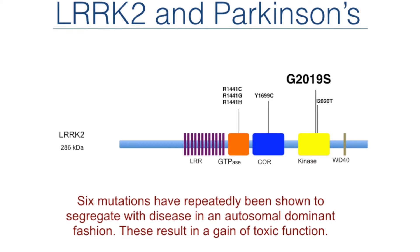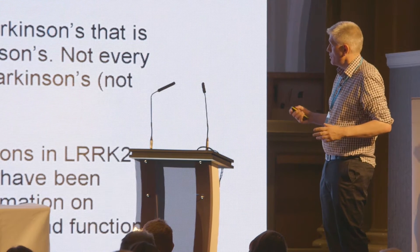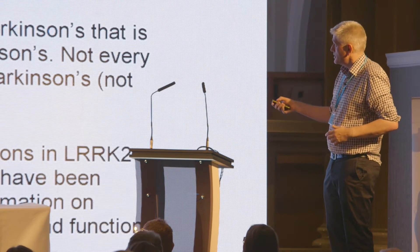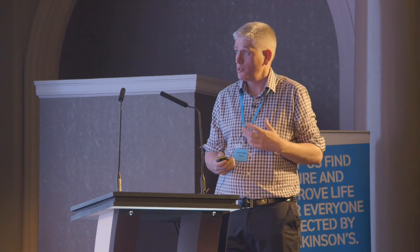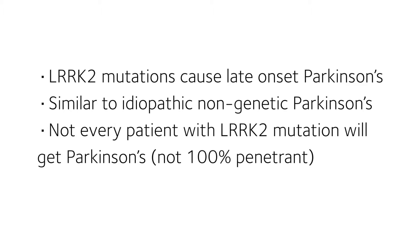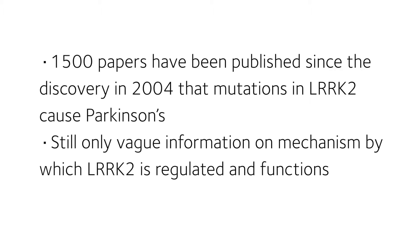This normally occurs over the age of 50. LRRK2 is relatively common — it is found in about one to two percent of all Parkinson's patients, making it one of the most common genetic causes after the GBA mutation. The mutations cause late-onset Parkinson's disease, very similar to the normal non-genetic form. There's been a lot of interest in LRRK2 since 2004, with 1,500 research papers published to better understand this enzyme.